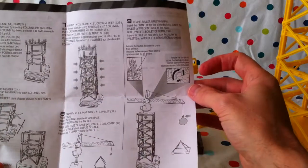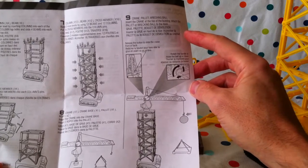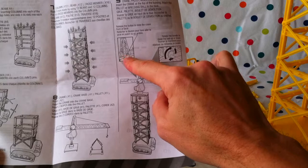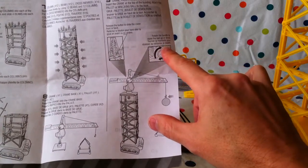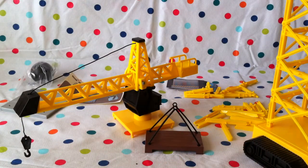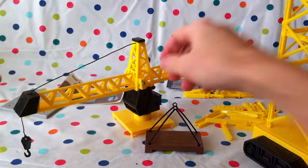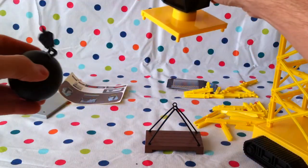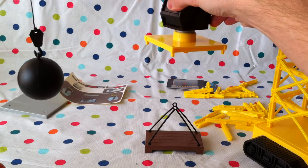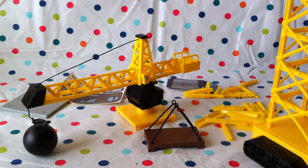So there we did number eight. Now we'll move on to nine. Crane, palette, wrecking ball. Insert the crane at the top of the building. Attach the pallet or wrecking ball to the hook. Here's our wrecking ball. Attach that to here. Clip it in nice and flat.